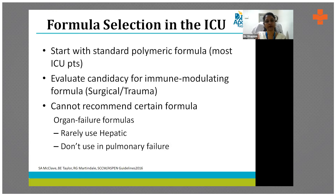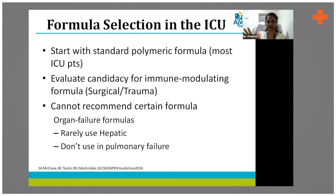In ICUs, guidelines broadly prescribe polymeric formula for critically ill patients, but as a dietitian I would say you have to customize. If the patient has a GI issue prior to admission, start them on peptide. If a patient has renal impairment, think of a disease-specific formula. Guidelines speak generally — standard polymeric formula is perfectly okay — but in practice, institution-wise things are different. Choosing disease-specific formulas is any day safer because you take a deep dive into the case scenario and prescribe accordingly.